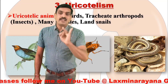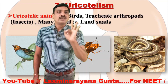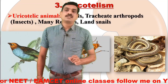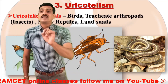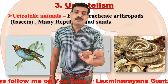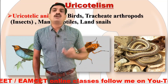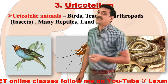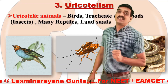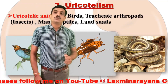You can simply remember the mnemonic BIRD: B for birds, I for insects, R for reptiles, D for desert animals — these are all uricotelic animals. Birds excrete uric acid; tracheate arthropods, mostly including insects, millipedes, and centipedes. Reptiles like snakes and lizards also excrete uric acid, along with land snails, all as their chief nitrogenous waste product. We might have seen the excreta of birds which contains small pellets — those are nothing but uric acid crystals.